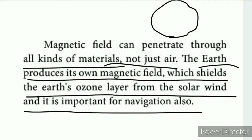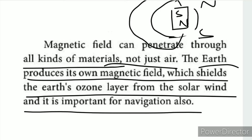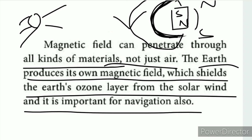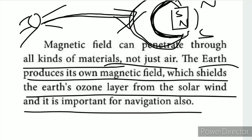You can see this in the ICT corner — the Earth is a magnet. The link in the description box will help you understand this. We have a bar magnet model showing the north and south poles — this is the imaginary magnet inside the Earth. The Earth's magnetic field protects the ozone layer from the solar wind coming from the sun.